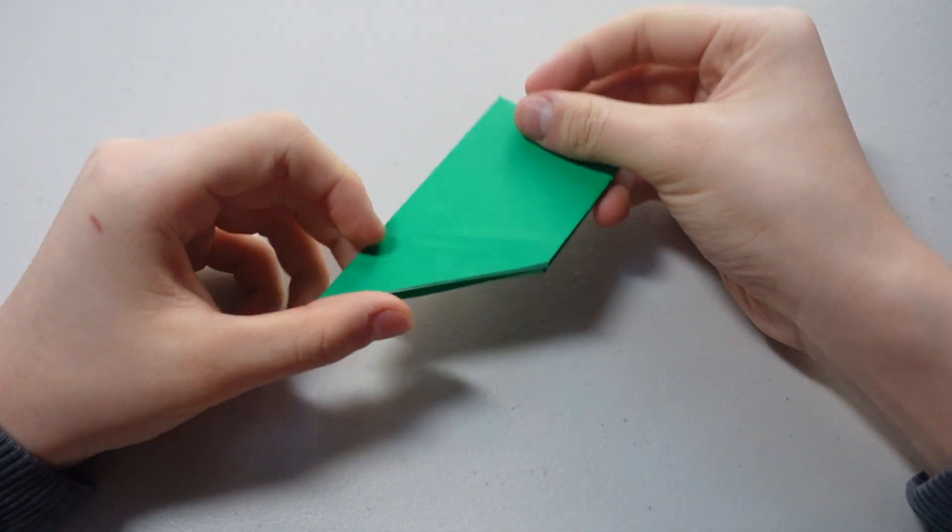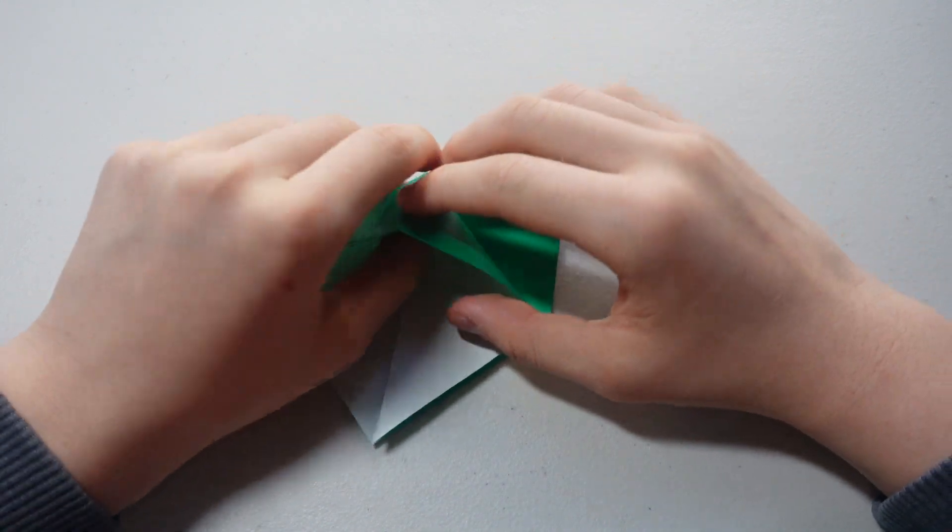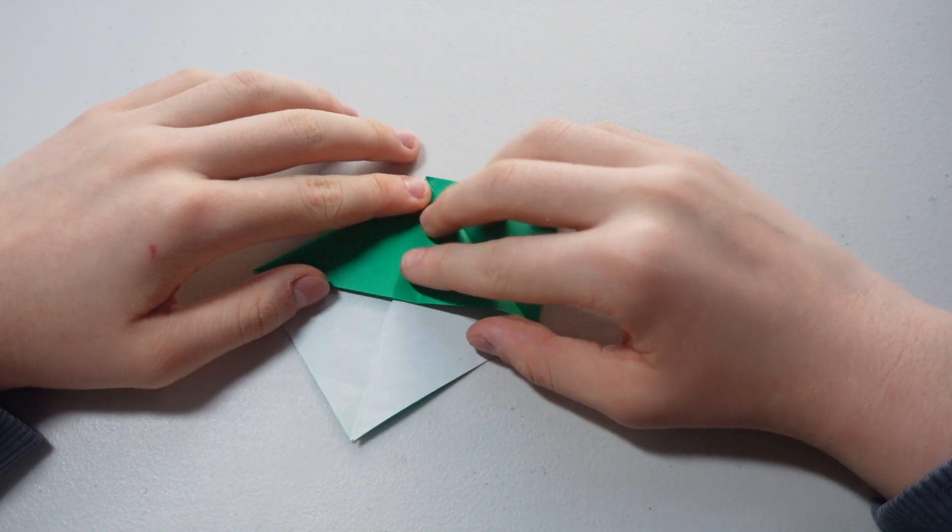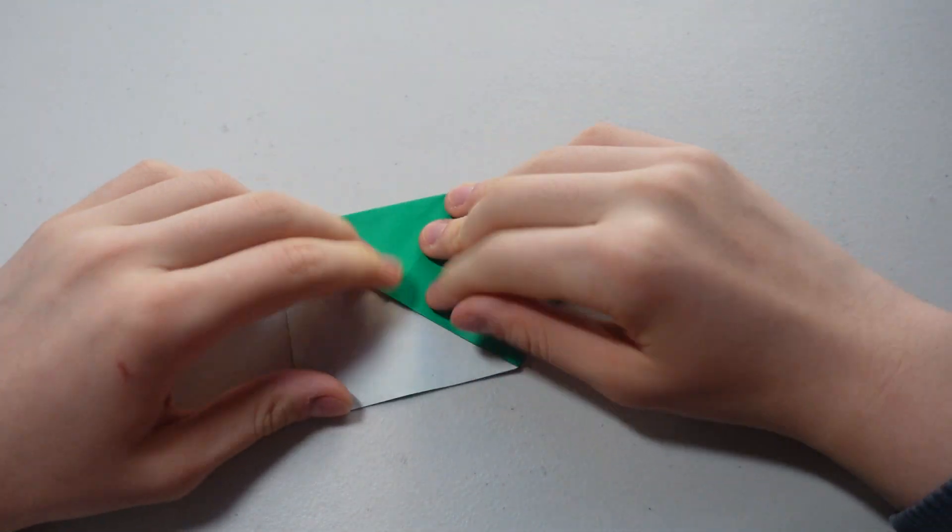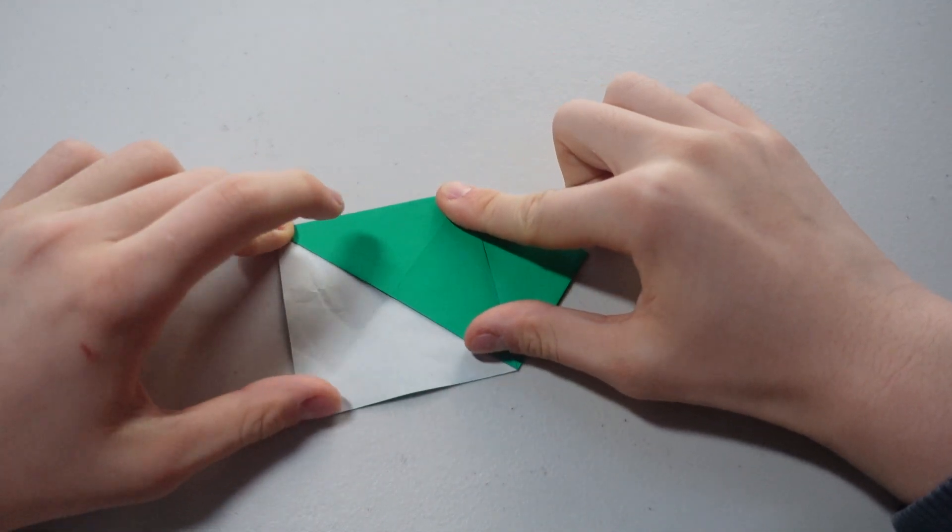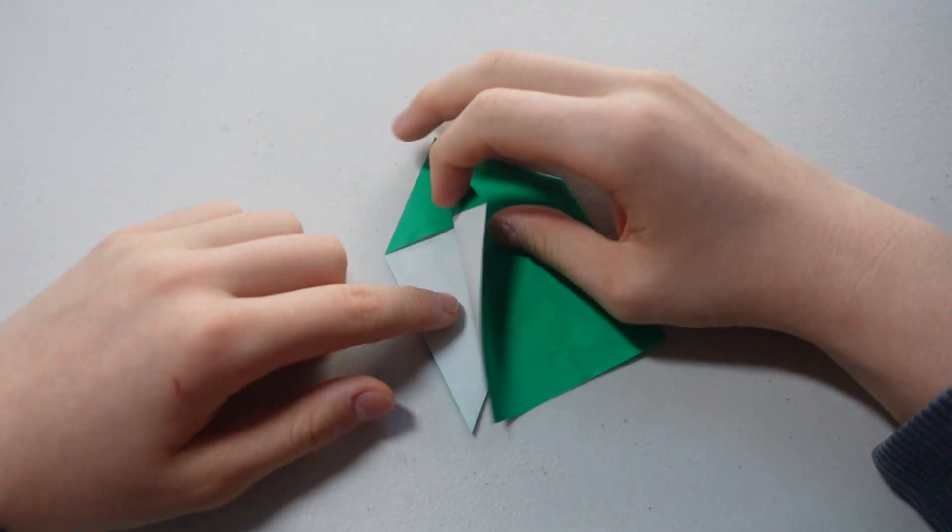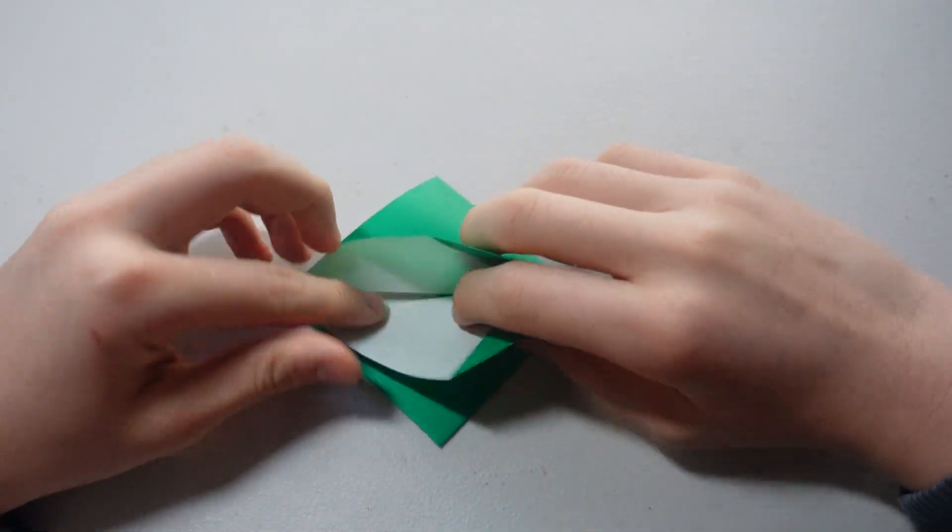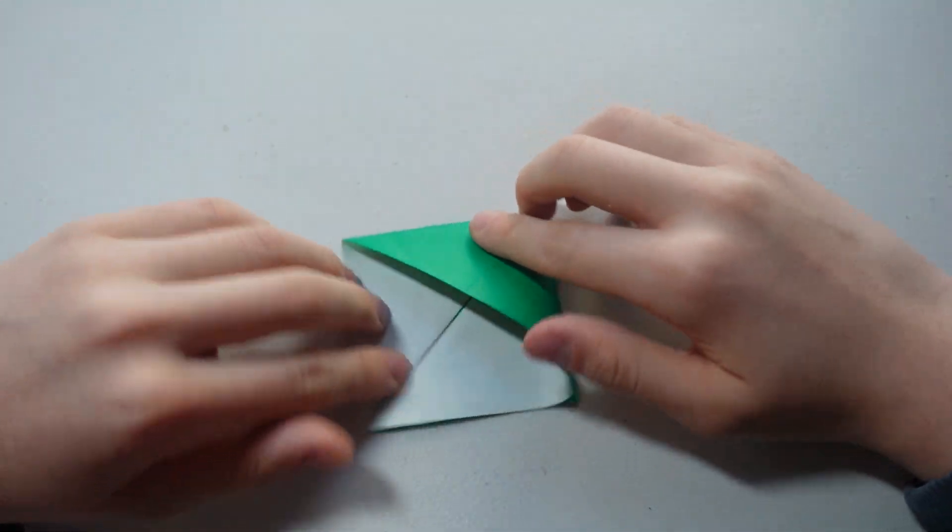So you get this shape. Now you see these little flaps right here? This flap, you want to open it and just press it straight down. And do the same thing for this side. Open the flap, little flap right here, open it and press it straight down.